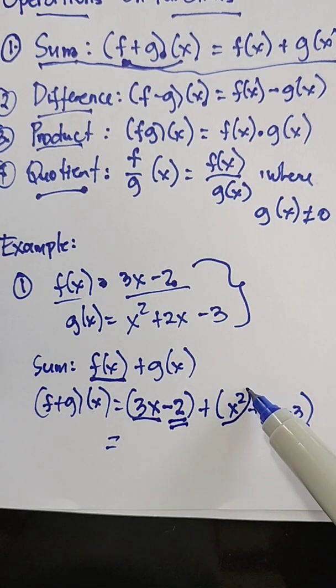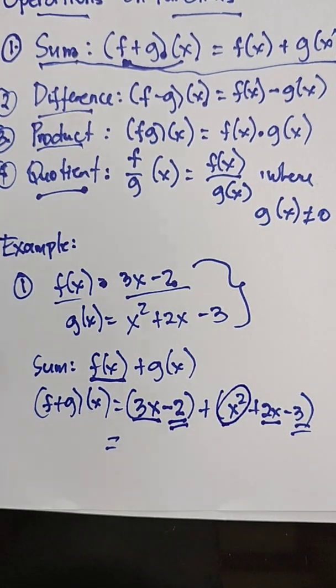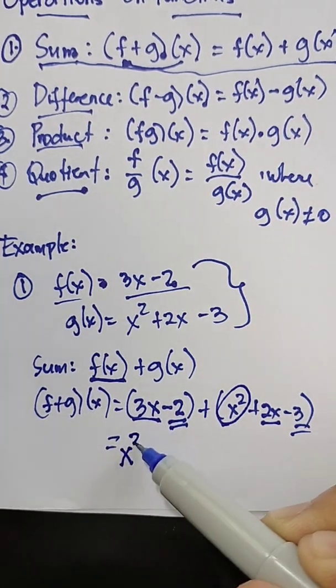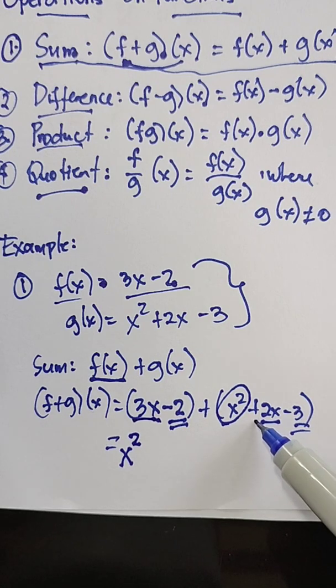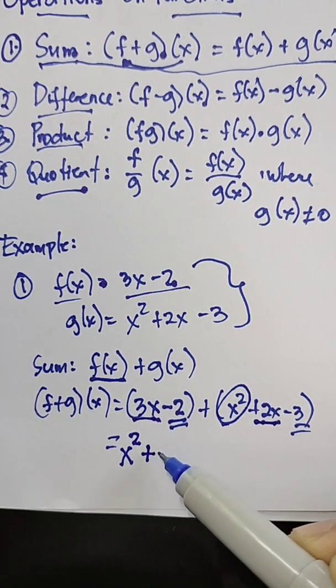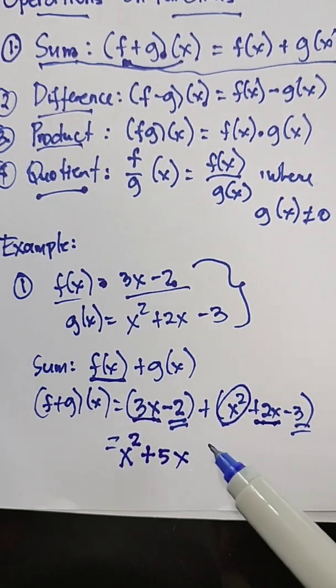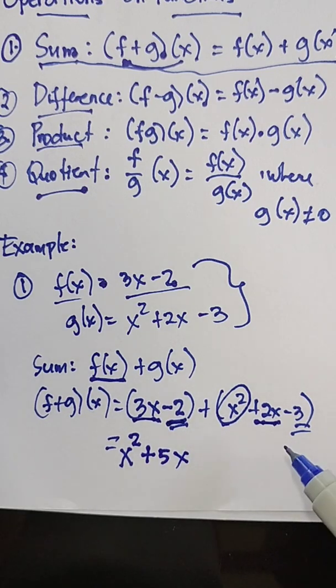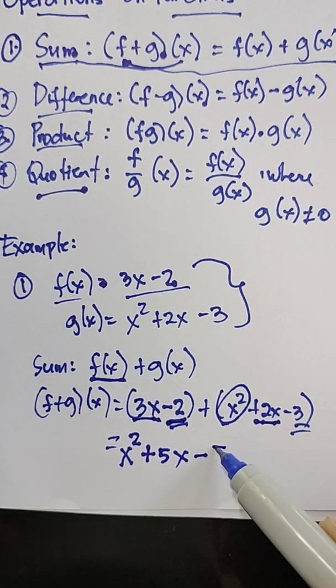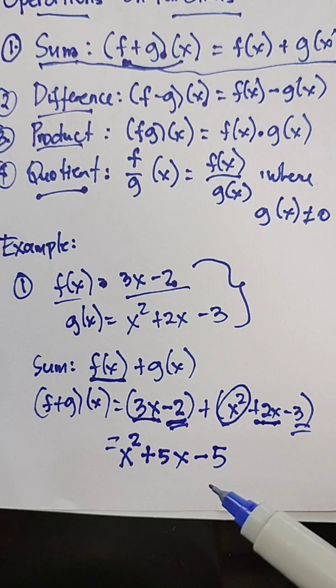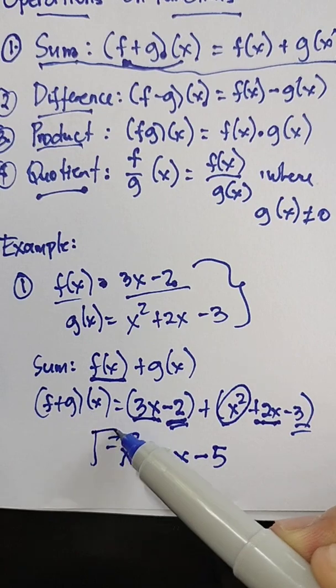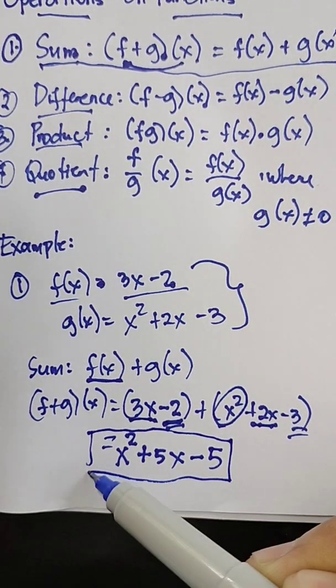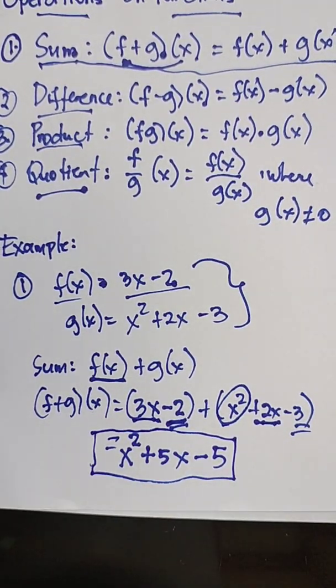When we say highest degree, the exponent is larger. So we have x squared, then 3x plus 2x, that is 5x. And negative 2 minus 3, that is negative 5. So this is now the value of our first operation, which is sum of functions.